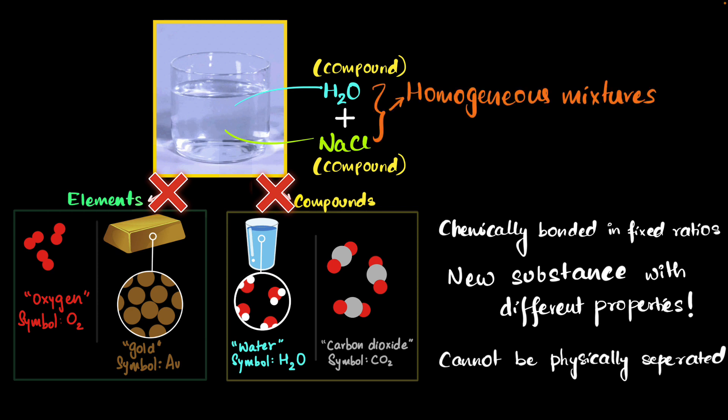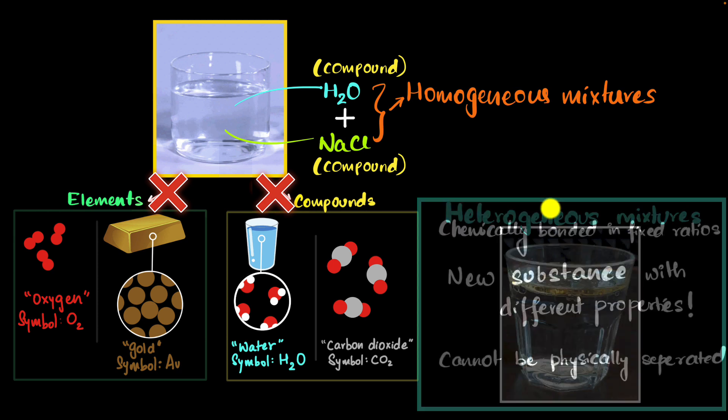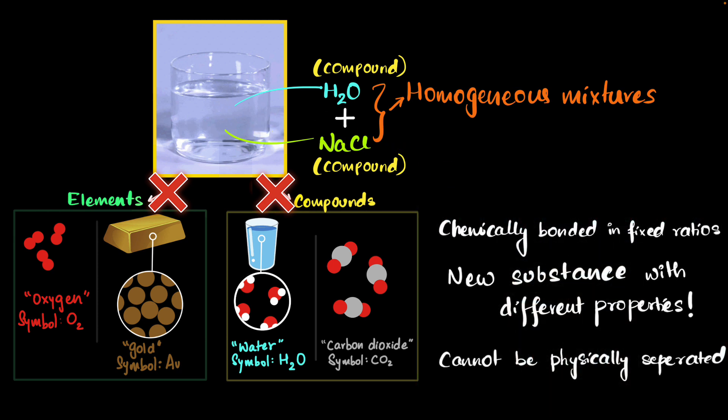In contrast, mixtures in which the different components can be easily seen, like for example, water and oil. You can clearly see oil, you can see water, you can see the boundary. In such cases, we call them heterogeneous mixtures. But in our example, salt water is a homogeneous mixture. And guess what? These homogeneous mixtures are what we call solutions.